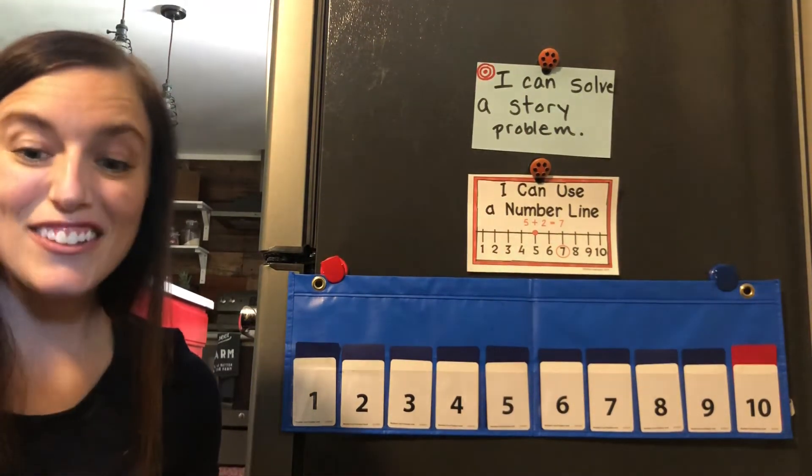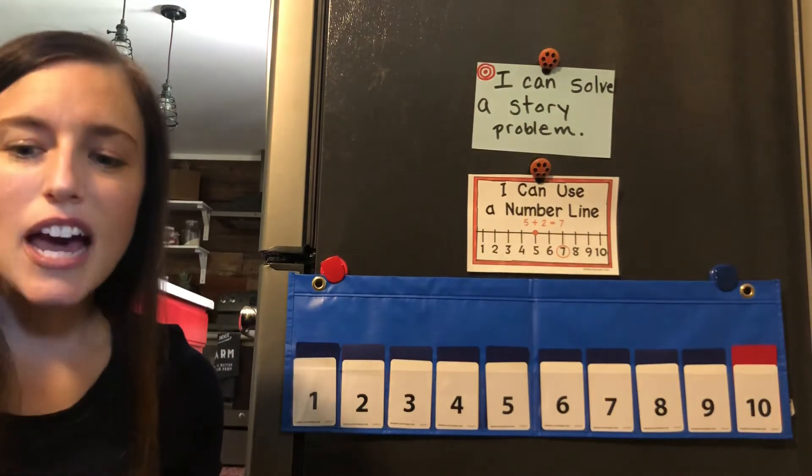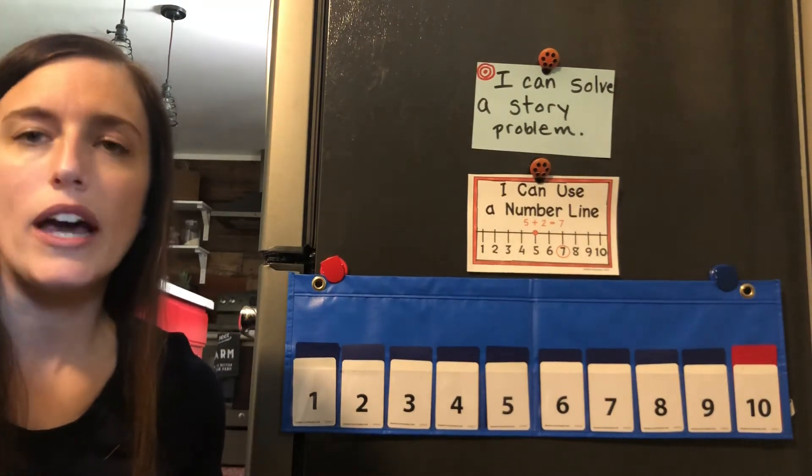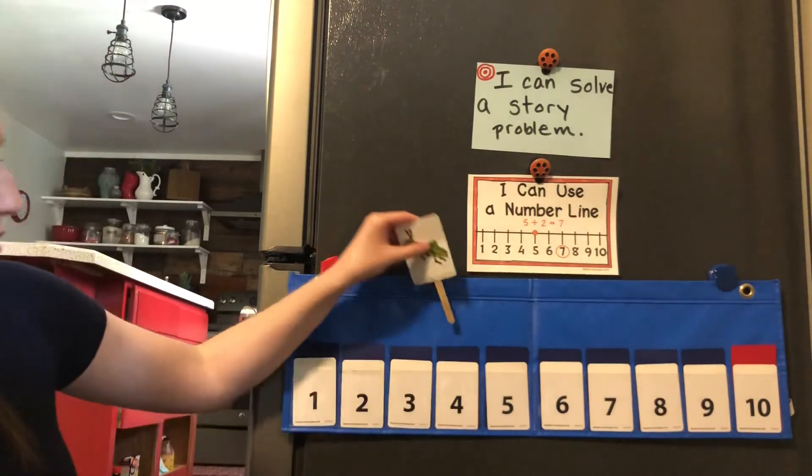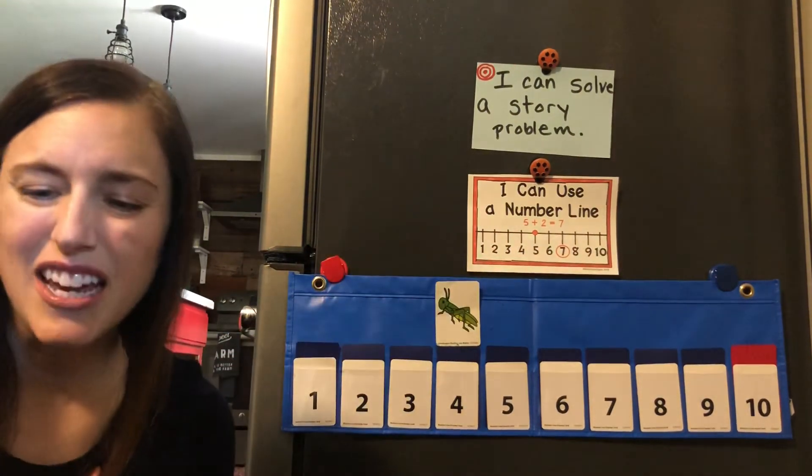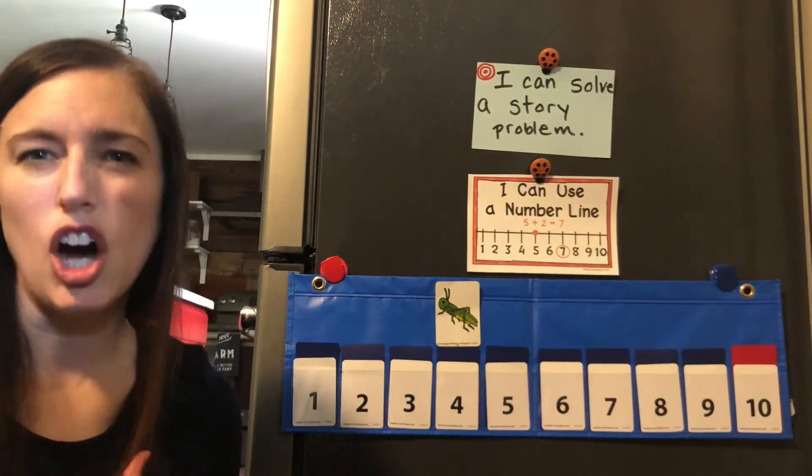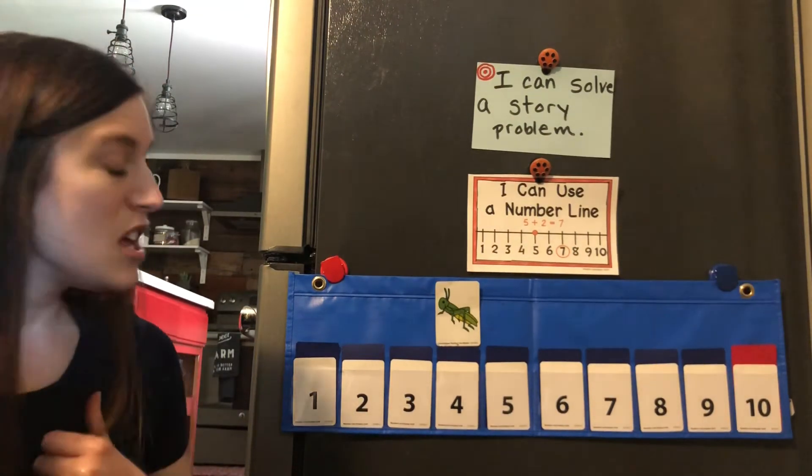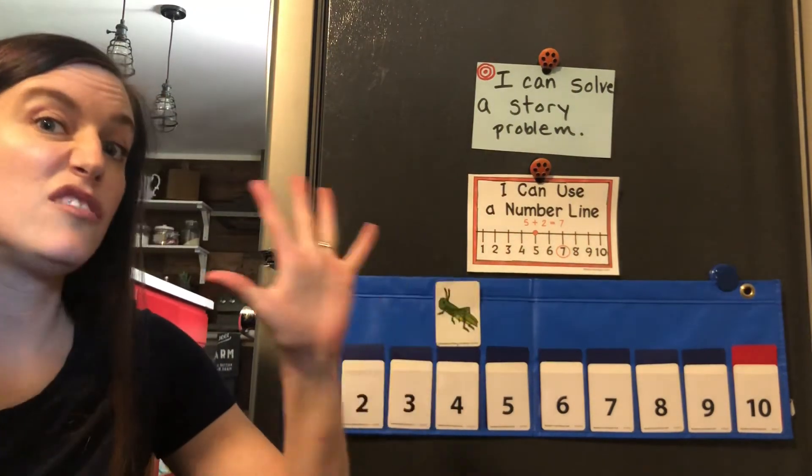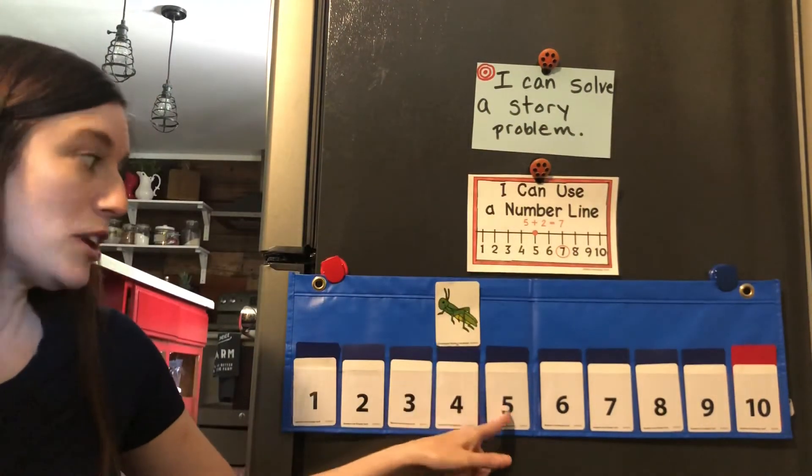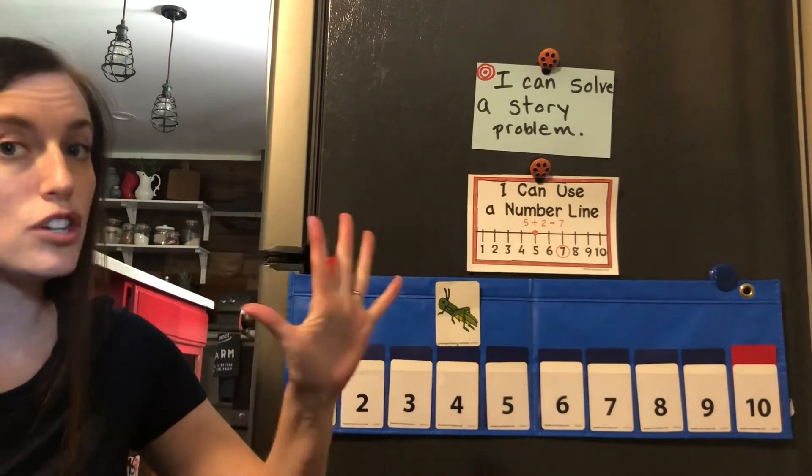Okay, so it said four of them are white. So, I'm going to put Hopper on the number four. Okay, and then it said five are brown. So, I'm going to help Hopper jump five jumps. It doesn't mean I'm going to move them up to the five. It means we're going to do five jumps. Are you ready?